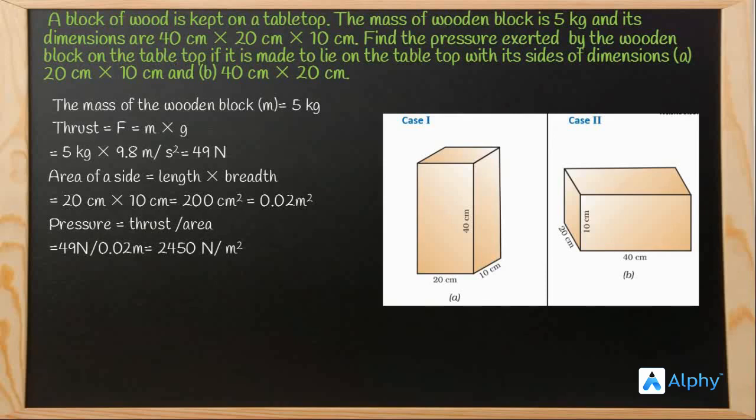When the block lies on its side of dimension 40 centimeter into 20 centimeter it exerts the same thrust that is when it is lying on 20 centimeter and 50 centimeter the thrust is still the 49 newton only. So here the length is 40 centimeter and the breadth is 30 centimeter. So the area is length into breadth that is 40 into 20 centimeter or 800 centimeter square which is equal to 0.08 meter square.